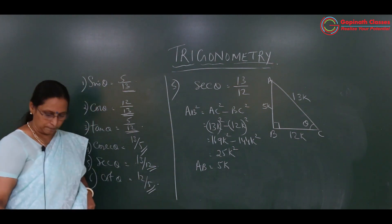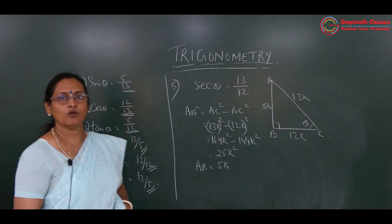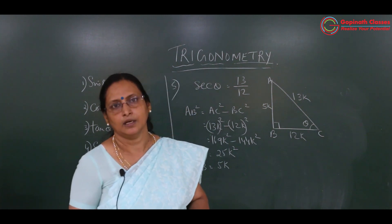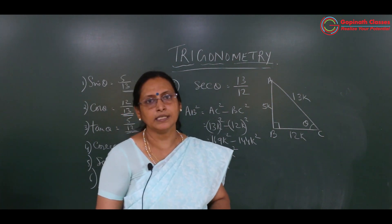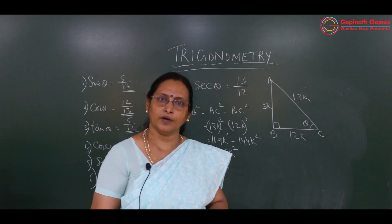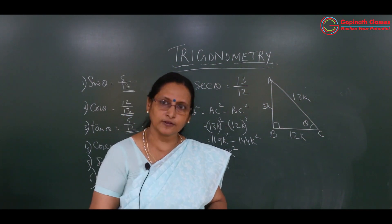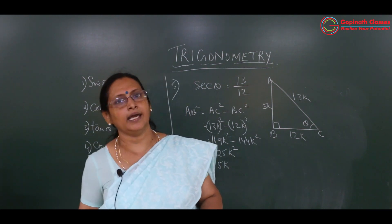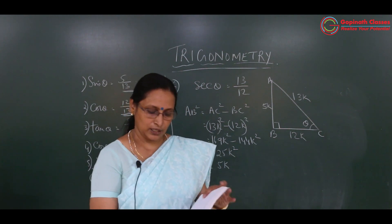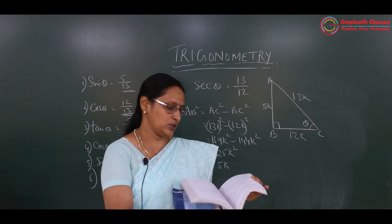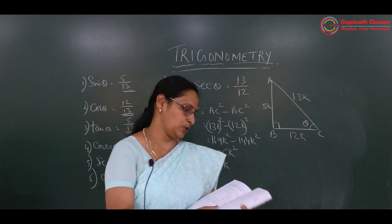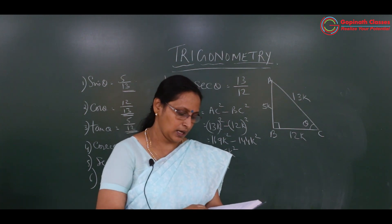Cot theta, the reciprocal of tan theta, is 12 upon 5. So basically the first concept of this chapter is: one ratio will be given, and using that ratio we can write any other trigonometric ratio. This is the fifth question.